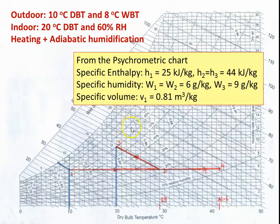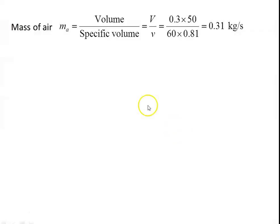From the psychrometric chart, read: H1 = 25 kJ/kg, H2 = H3 = 44 kJ/kg. Specific humidity: W1 = W2 = 6 g/kg, W3 = 9 g/kg. Specific volume at point 1 is 0.81 m³/kg. Calculate mass of air: M = volume / specific volume = (0.3 × 50) / 60 / 0.81 = 0.31 kg/s.